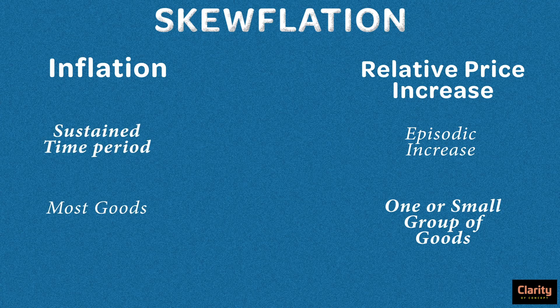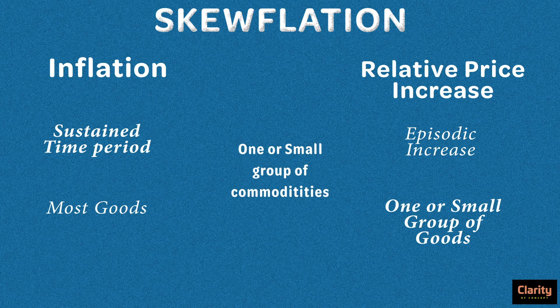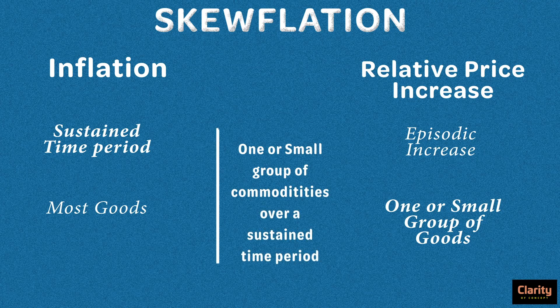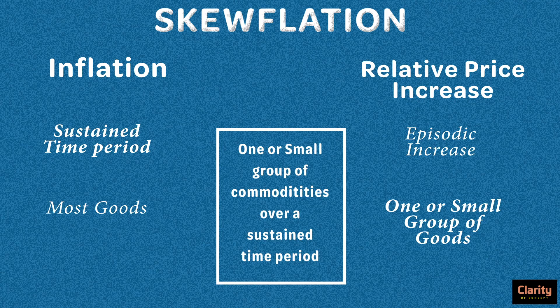There is a third category, which is a combination of these two. Imagine prices of one or a small group of commodities increase over a sustained time period — combining the 'small group of commodities' aspect of relative price increase with the 'sustained time period' aspect of inflation. This third category is known as skinflation. It is a relatively new term, and skinflation is common in India, especially for food prices.